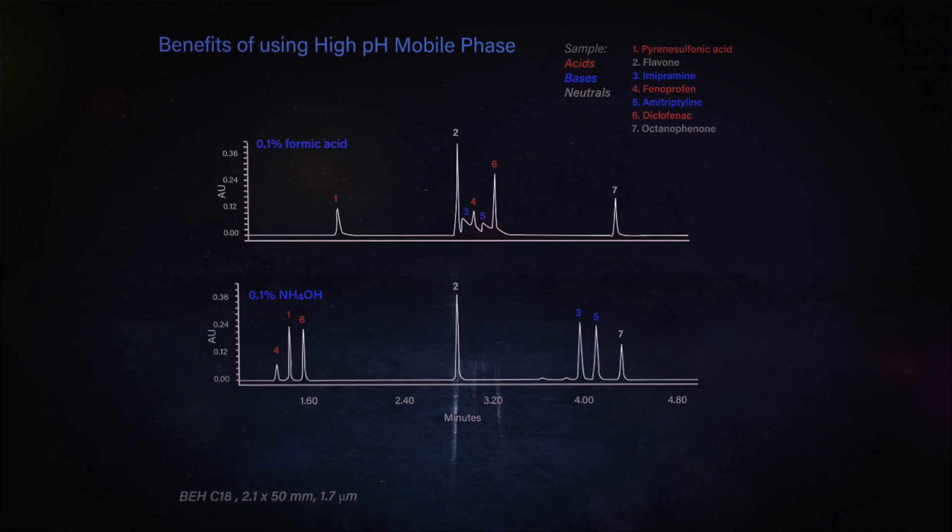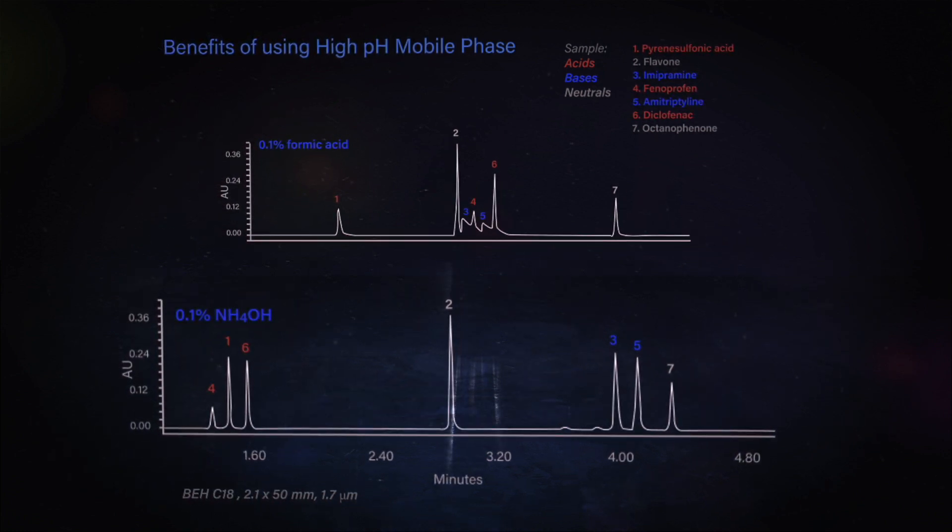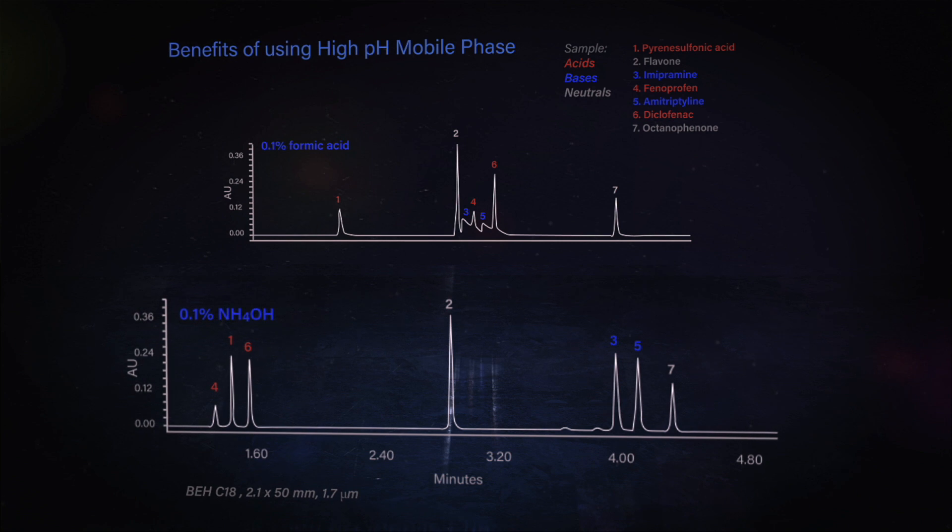But what happens though, is when we use the ammonium hydroxide or go to high pH, we see a complete elution order change between the acidic and the basic compounds. The acidic compounds become ionized or more hydrophilic, and they come really into the void and come really up front.